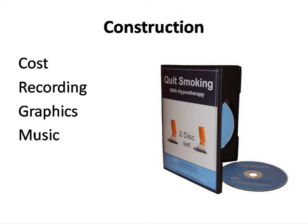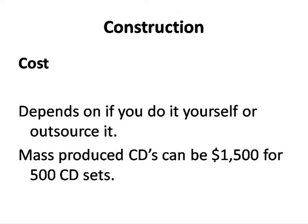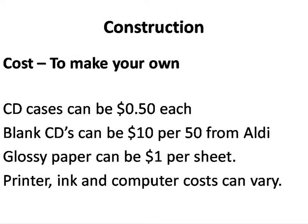Construction covers cost, recording, graphics, and music. Cost depends on whether you do it yourself or outsource it. Mass production CDs can be $1,500 for 500 CD sets. To make them yourself: CD cases can be $0.50 each from eBay — check dimensions for slim, single, or double cases. Blank CDs can be $10–$20 for 50 from Aldi or a news agency. Glossy paper can be $1 per sheet — I print my own cover and put it in the CD jacket. Printers like a Canon inkjet are often around $50.